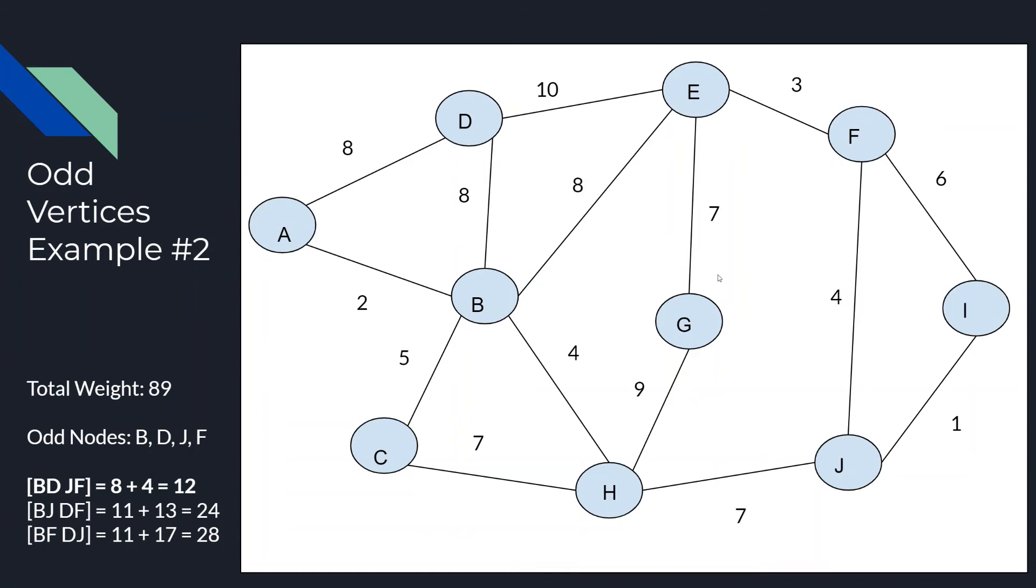Alright, so now we have our second example with another odd vertices example. On this specific graph, we can see that we have four total odd nodes. With node B having a degree of 5, node D having a degree of 3, node J and node F both having a degree of 3 as well. So, with the Chinese Postman algorithm, we would first, in order to take the total weight, we would sum up all the weights on the edges. In this case, we would get a total of 89.